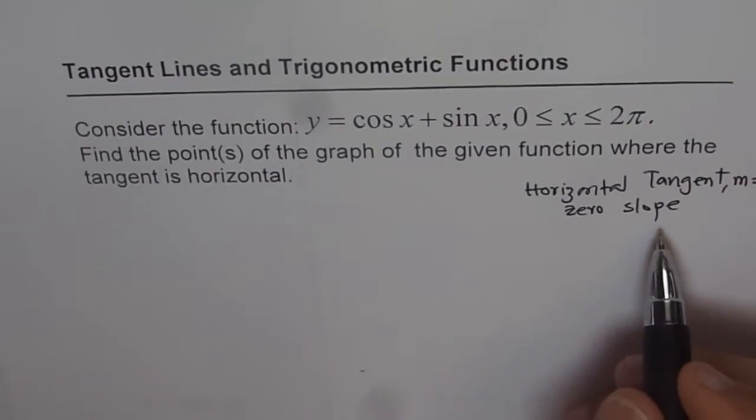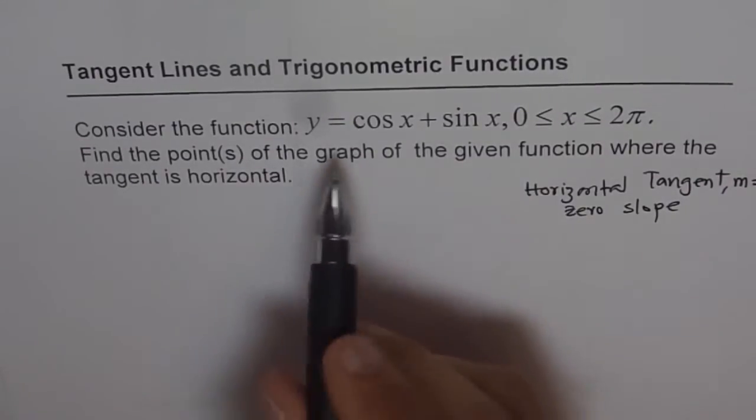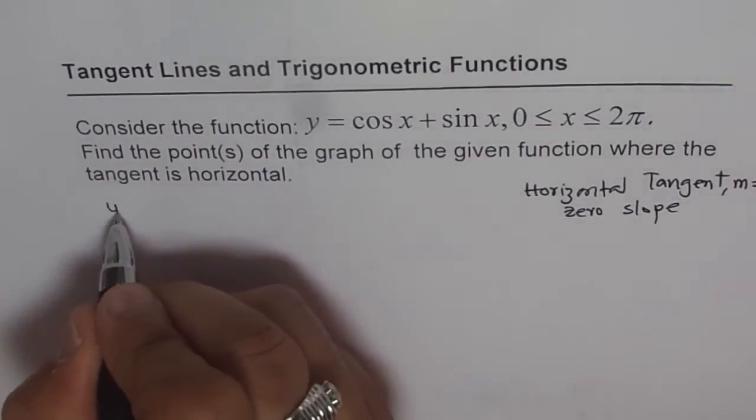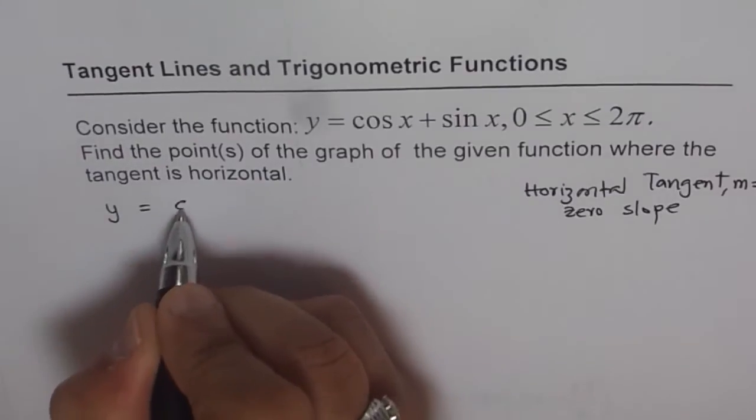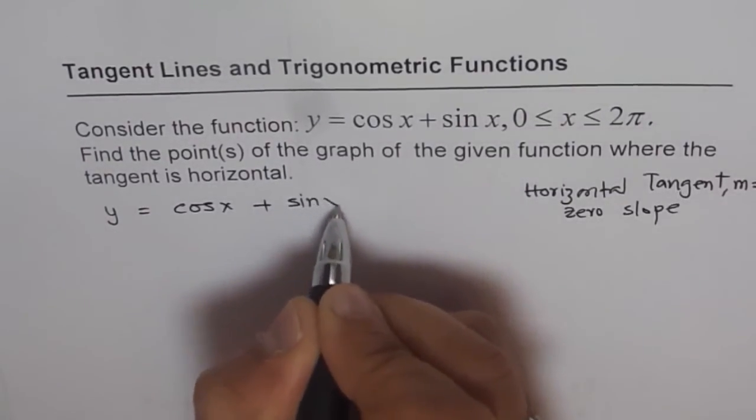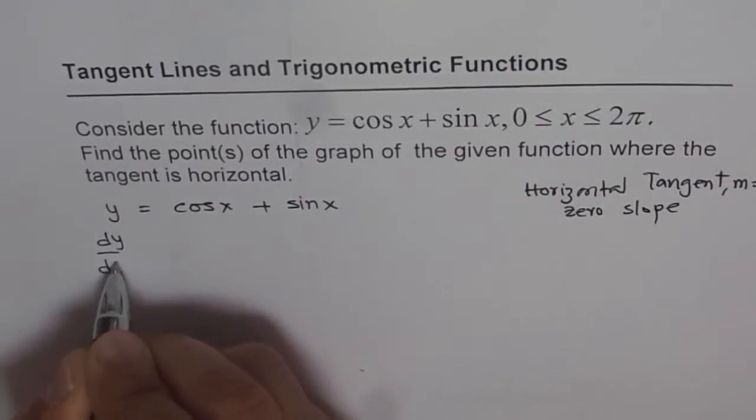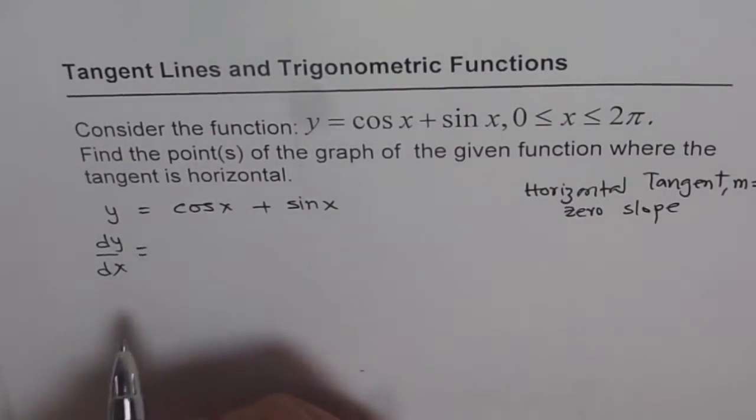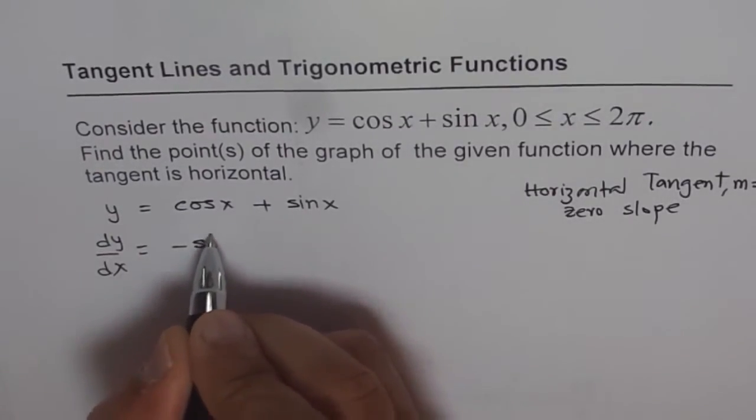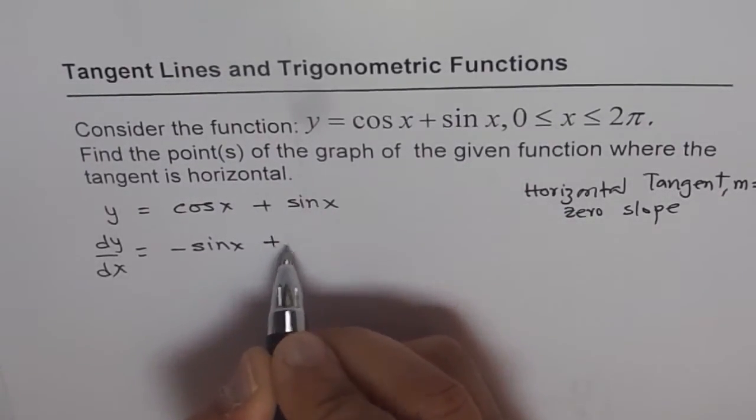So for slope equals 0, we need to find the derivative, y dash. Let's differentiate this equation with respect to x. We have our equation as y equals cos x plus sin x. The derivative, dy/dx, is equal to derivative of cos x, which is minus sin x, and derivative of sin x, which is cos x.